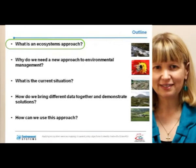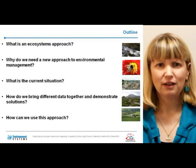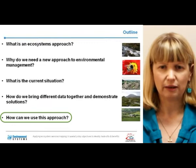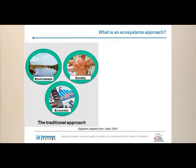This talk discusses how we can apply ecosystem mapping to spatial policy objectives to identify different trade-offs and benefits. The talk is split into five main parts: what is the ecosystem approach, why do we need a new approach to environmental management, what's the current situation and where have we got to with the modelling, how do we bring the data sets together and demonstrate solutions, and how can we use this approach to further joint working projects together?